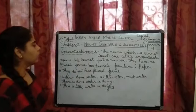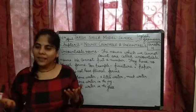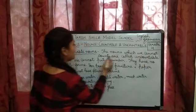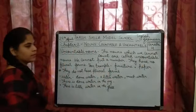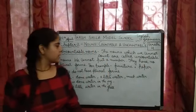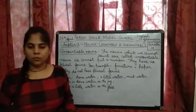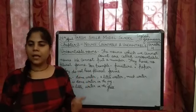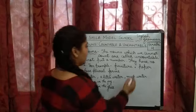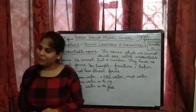Uncountable nouns. What are uncountable nouns? By the name itself, you can easily identify what uncountable nouns are. The nouns which we cannot count are called uncountable nouns. We cannot put a number before uncountable nouns, as we can put a number before countable nouns. They have no plural forms — uncountable nouns do not have plural forms.